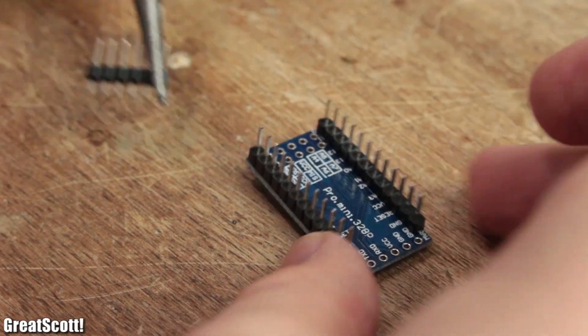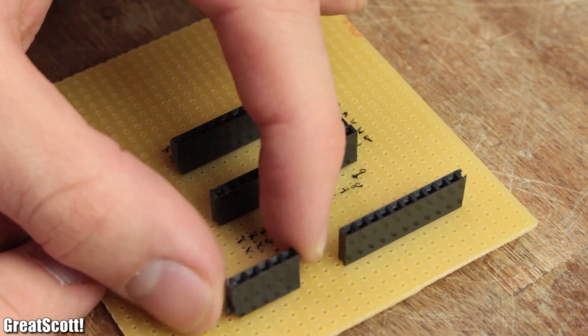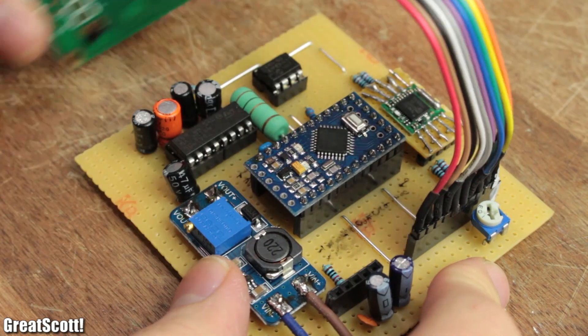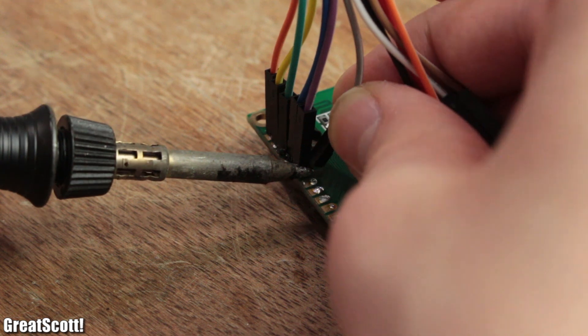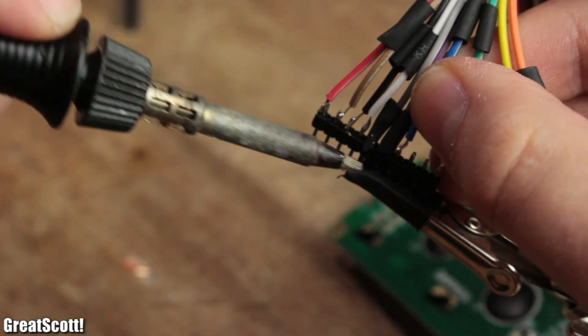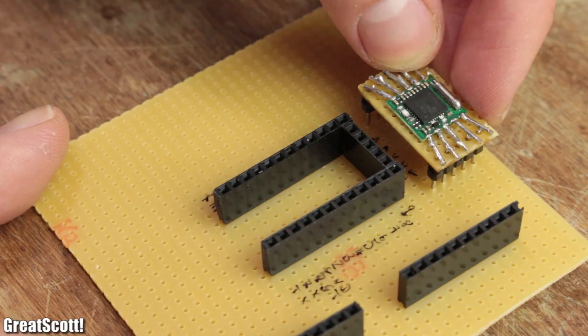Then I attached male headers to my Arduino Pro Mini and also soldered 10 pin and 5 pin female headers onto the board. These will later be used for the LCD and rotary encoder which both got wires fixed to their pins while the other side of the wires receive male headers with shrinking tube to avoid shorts.